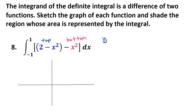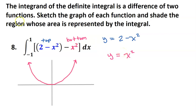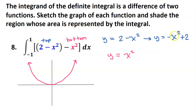So the top function must be y equals 2 minus x squared, and the bottom function must be y equals x squared. y equals x squared is a parabola whose vertex is at the origin, facing up. y equals 2 minus x squared is the same as y equals negative x squared plus 2 — an upside-down parabola that has been shifted vertically up 2, whose vertex is at (0, 2).